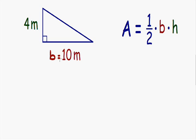Now I'm going to find the height of the triangle. The height is always the vertical distance between the top of the triangle and the base. Since this is a right triangle, the vertical distance between the top and the base is exactly the same as the left leg of the triangle. So the left side of 4 meters is going to be equal to our height.